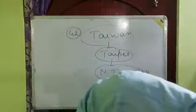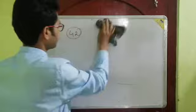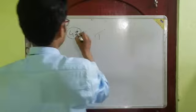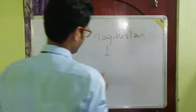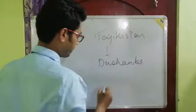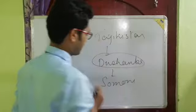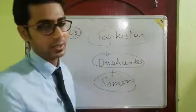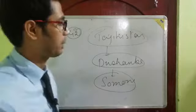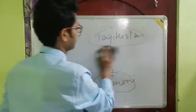Next is Tajikistan. It is also another important Central Asian country. The capital of Tajikistan is Dushanbe and the currency is Somoni. Dushanbe is the capital of Tajikistan and Somoni is the currency of Tajikistan.